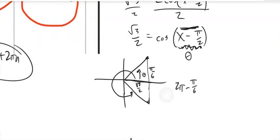And if I think about this in sixths, this is 12 pi over 6 minus pi over 6, which is 11 pi over 6.